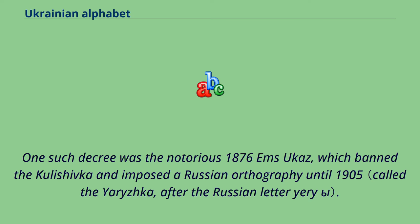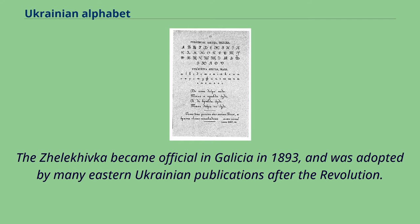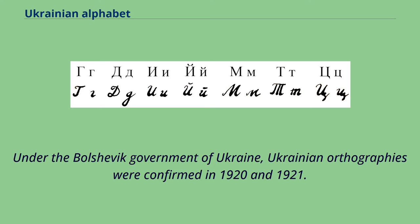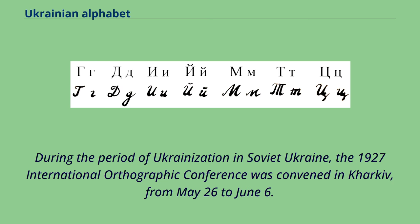One such decree was the notorious 1876 Ems Ukaz, which banned the Kulishivka and imposed a Russian orthography until 1905. The Kulishivka was adopted by Ukrainian publications only to be banned again from 1914 until after the February Revolution of 1917. The Zhelikhivka became official in Galicia in 1893 and was adopted by many eastern Ukrainian publications after the revolution. The People's Republic of Ukraine adopted official Ukrainian orthographies in 1918 and 1919, and Ukrainian publication flourished under Skoropadsky's Hetmanate. Under the Bolshevik government, Ukrainian orthographies were confirmed in 1920 and 1921.